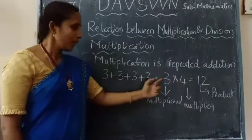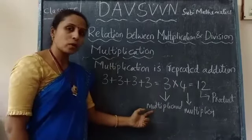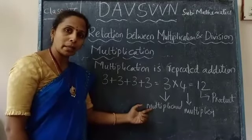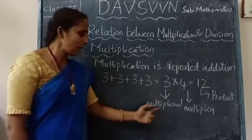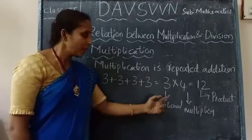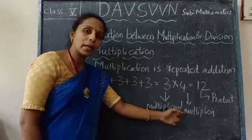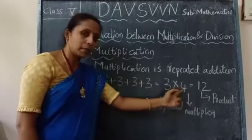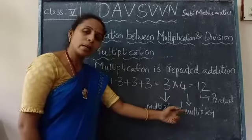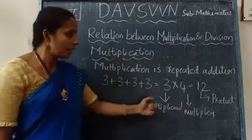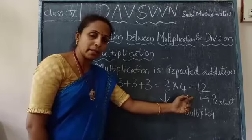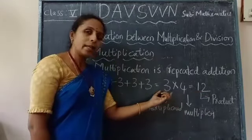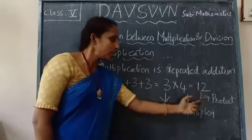Here the number 3 is called as multiplicand. The number which is to be multiplied is called as multiplicand. And 4 is called as multiplier. The number with which 3 is multiplied is called as multiplier. And the answer we get after multiplication is called as product. In this example, 12 is the product.